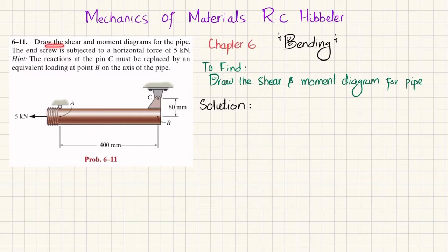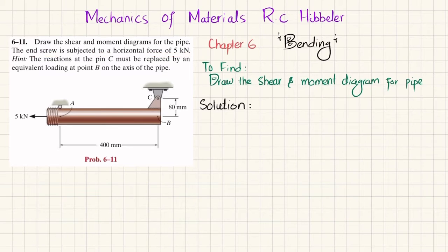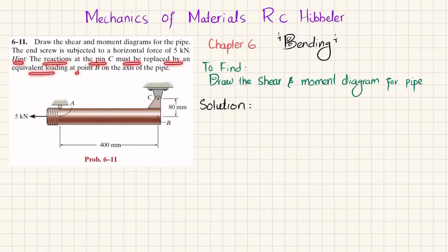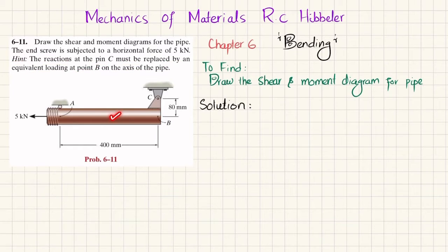The statement is: draw the shear and moment diagram for the pipe. The end screw is subjected to a horizontal force of 5 kilonewton. The hint given is that the reaction at pin C must be replaced by an equivalent load at point B on the axis of the pipe.